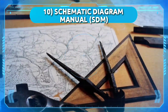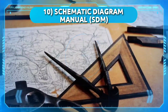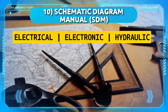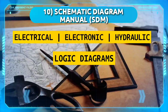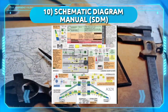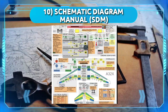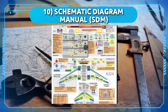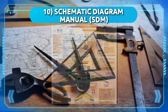Number 10: Schematic Diagram Manual, or SDM. This manual contains schematic diagrams of electrical, electronic, and hydraulic systems on the aircraft, as well as logic diagrams for applicable systems. The diagrams in the AMM and other manuals are simplified; however, the SDM contains detailed information and identifies wiring harnesses, connectors, and interfacing equipment on the aircraft.